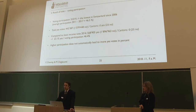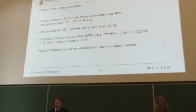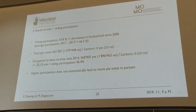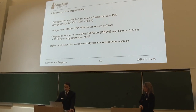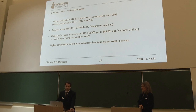I want to make a quick comparison to the basic income vote of 2016. The voting participation there was 46.4%, and they got more yes votes — but a higher voting participation doesn't necessarily lead to more yes votes in percent. The basic income got only 23.1% of yes votes.